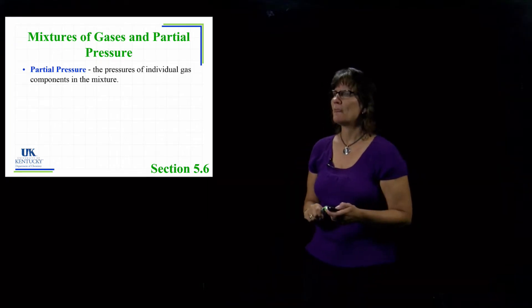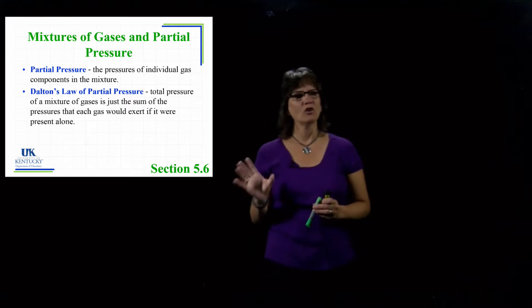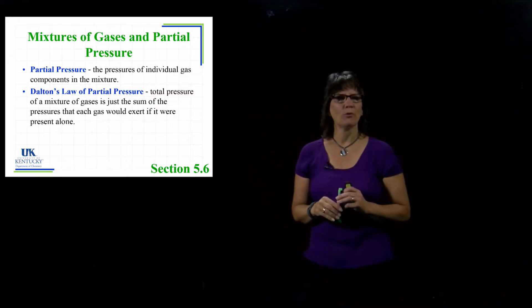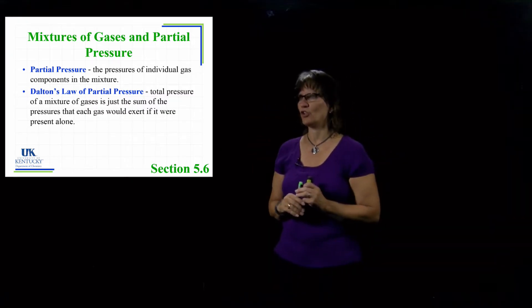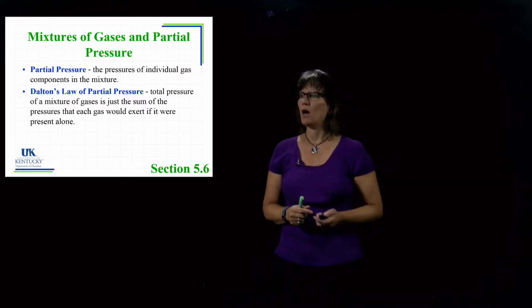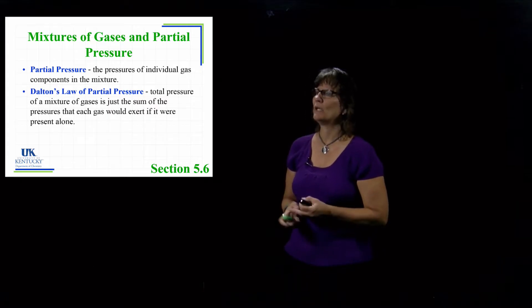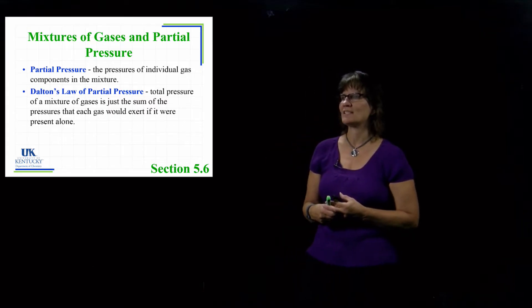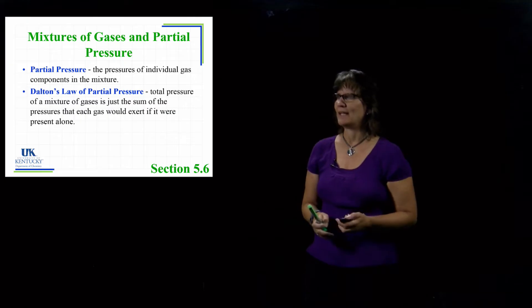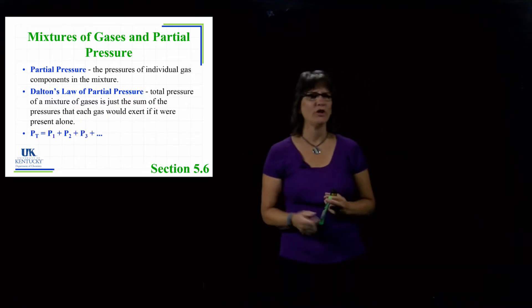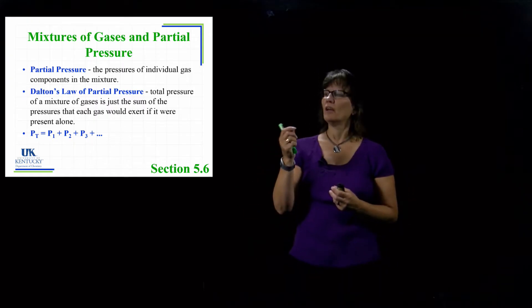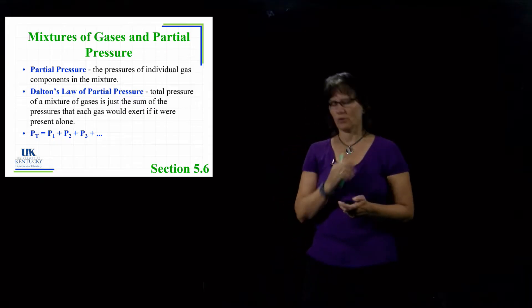If you've got a mixture of gases, what Dalton's Law says is that the total pressure would be the sum of all of those individual pressures hitting against the walls of the container. The total pressure of a mixture of gases is the sum of the partial pressures - the pressure each gas would exhibit if it were in there by itself. Mathematically: P_total = P1 + P2, and so forth.